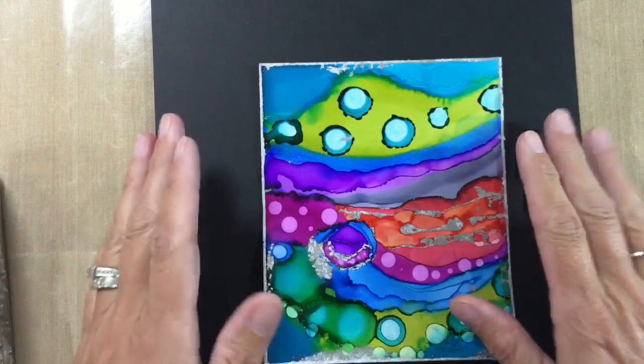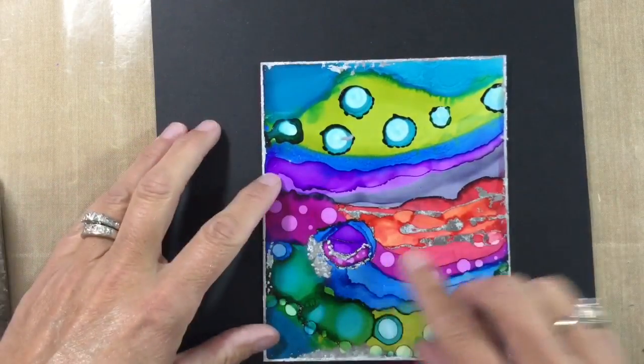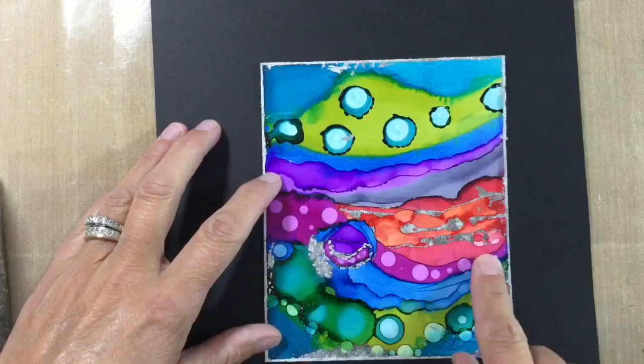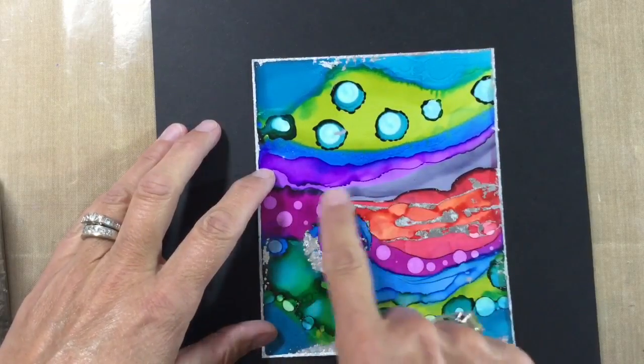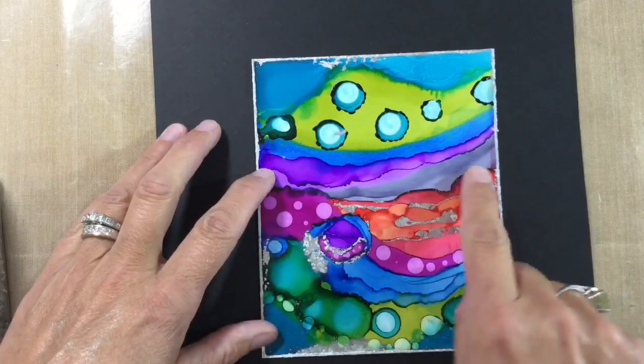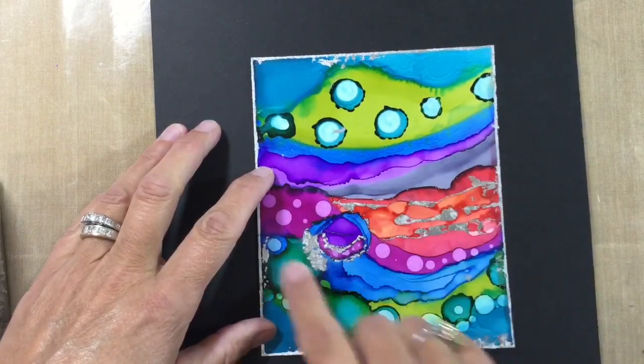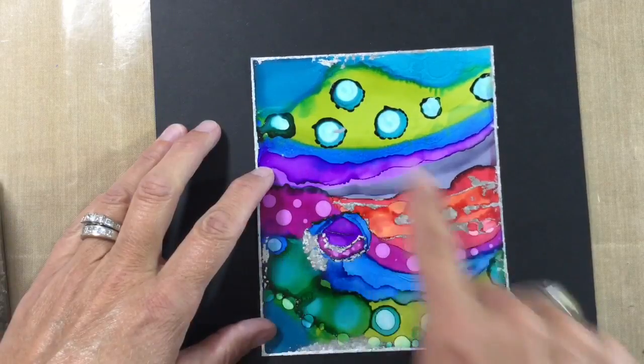Now the flakes went absolutely everywhere. It makes one almighty mess so be warned. And the flakes were just literally covering the page and these areas of silver here were just a happy accident. This is where the alcohol ink had puddled and obviously it wasn't as dry as I thought it was and so the flakes had stuck to all of these areas here as well.